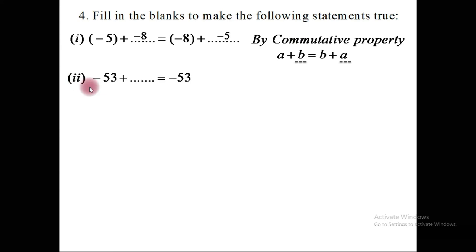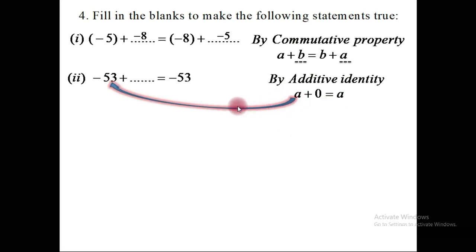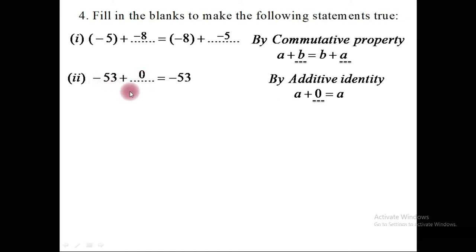Sub-number 2: minus 53 plus blank equals minus 53. We fill this blank using the additive identity: any integer A added with 0 gives the same integer. Since A is minus 53, adding 0 gives minus 53.